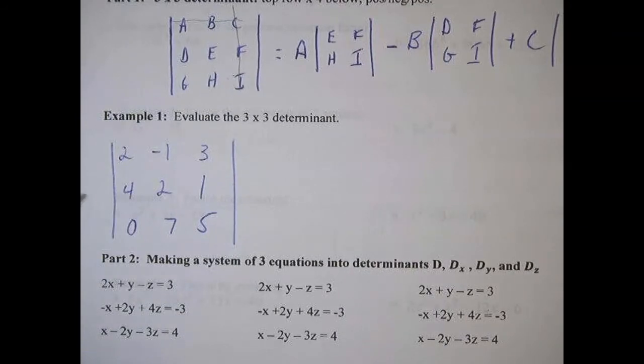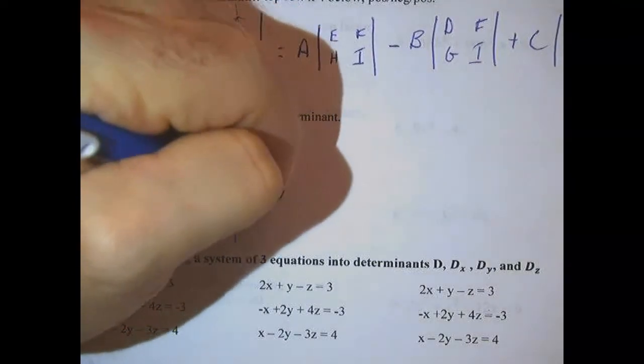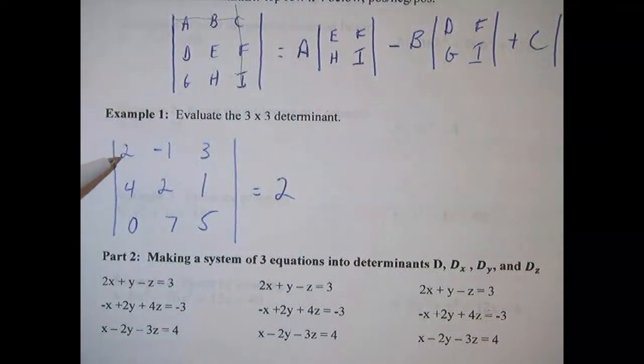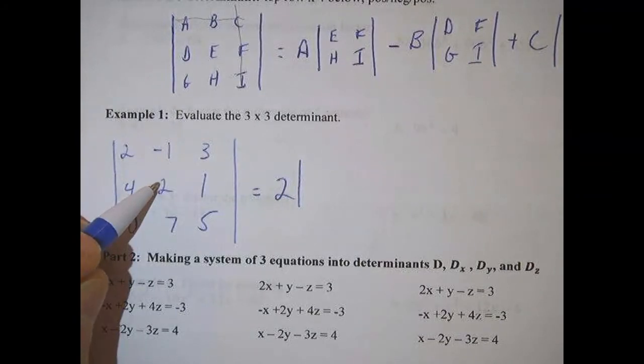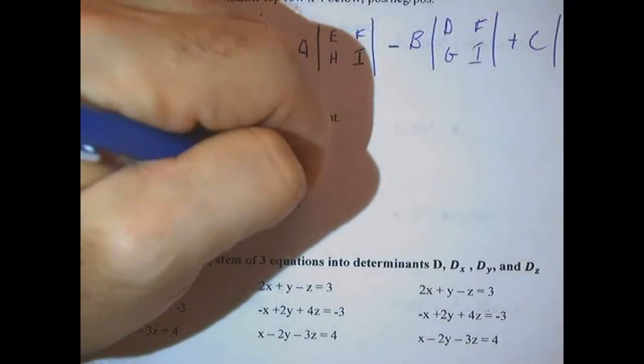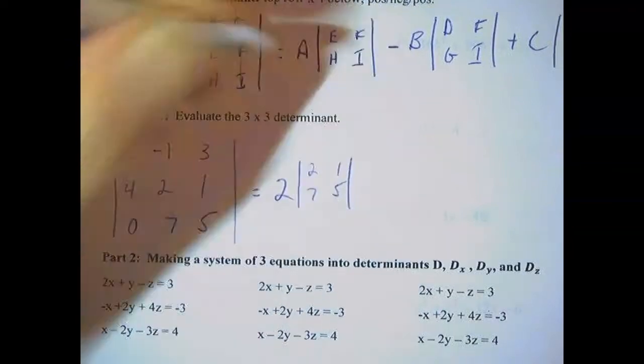Here's our first 3 by 3 determinant. This will be a number when we're done, just going to be a number. As long as it's all numbers, there's no variables in here. The first thing I do is I just kind of imagine that this line is crossed out. So it's going to start out with 2 times, that's our A, 2 times the 2 by 2 determinant, which is 2, 7, 1, 5.